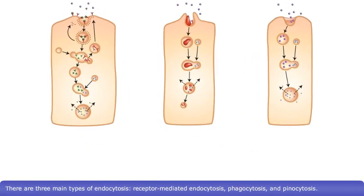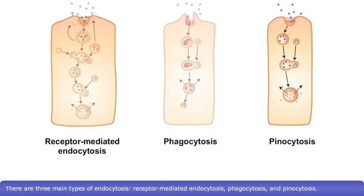There are three main types of endocytosis—receptor-mediated endocytosis, phagocytosis, and pinocytosis.